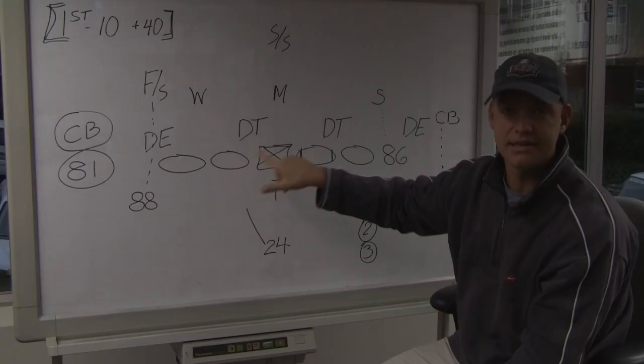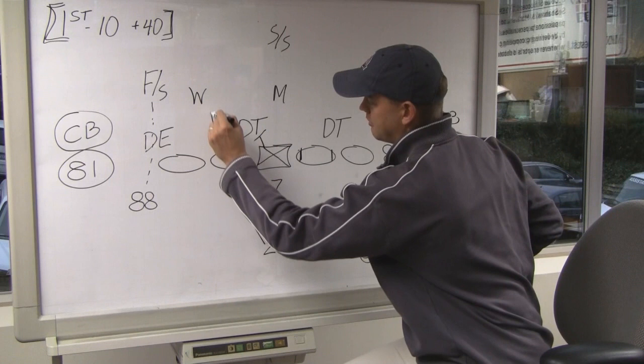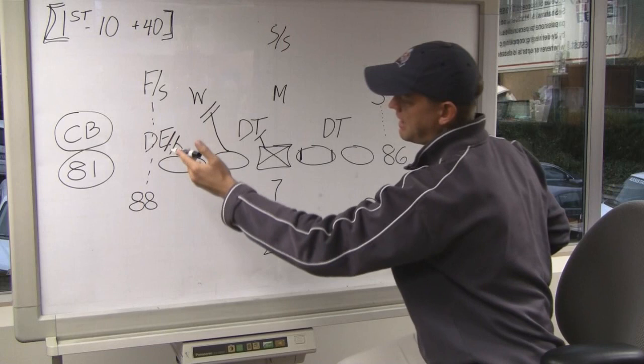Because everybody has positive angles. Max Unger's on the D-tackle, Robert Gallery comes up on the weak side linebacker, Okung is on the end. The free safety in the box is going to be the farthest defender away from the run when it comes back.